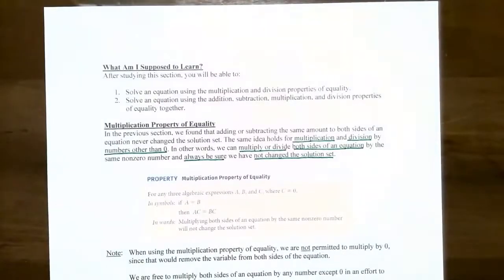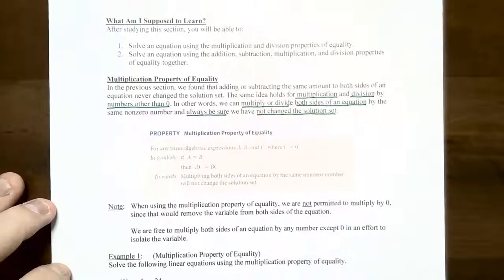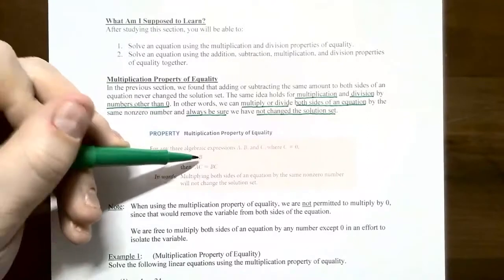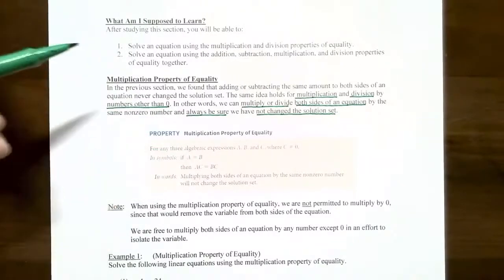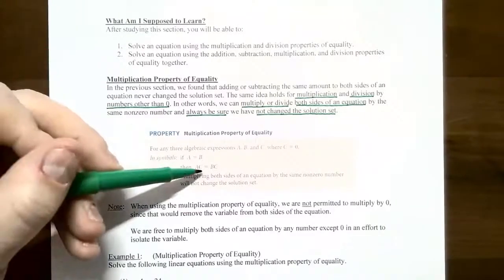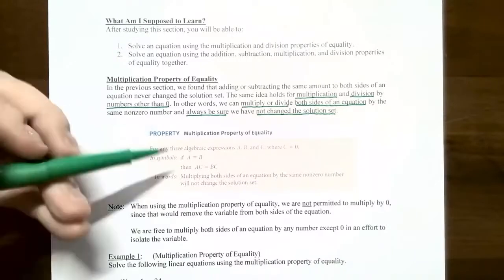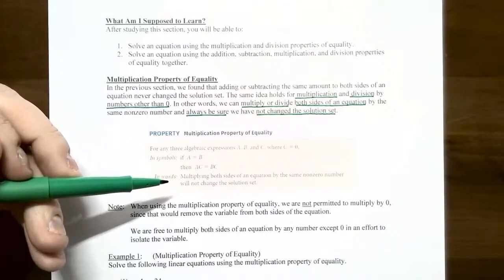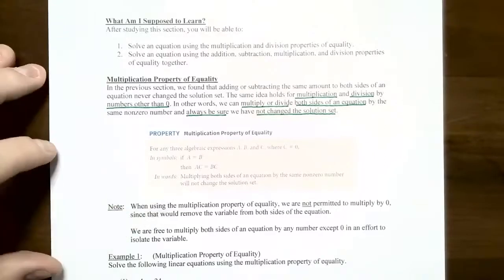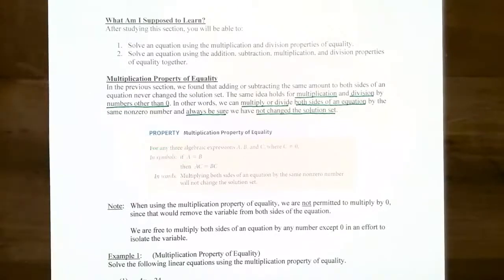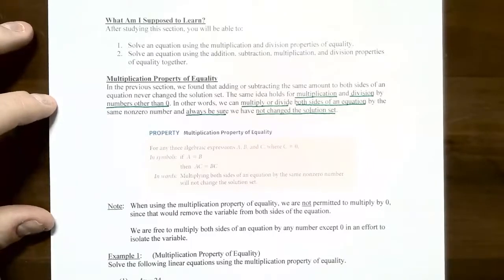The solution will remain the same — meaning you have equivalent equations — as long as you multiply or divide by a non-zero number on both sides of the equation. A, B, and C are algebraic expressions where C cannot be zero. If A equals B is your equation, you can multiply both sides by the same number or expression C, giving you A times C equals B times C, an equivalent equation. Multiplying both sides by zero is not allowed because it eliminates the variable altogether.